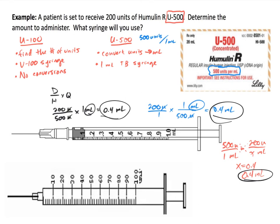We need to choose the correct syringe. We're not going to use a syringe calibrated for units — we're actually going to use a 1 mL TB syringe. Here's 0.4 right here. So I'm going to mark 0.4 mL very clearly and shade up to that point. And that's it.